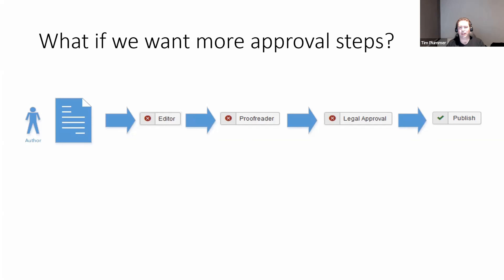But what happens if we want a more sophisticated workflow? For example, if you were publishing content and you wanted one person to create the article, another person to do some editing, then a proofreader to check spelling and grammar, then a legal department to make sure you're complying with laws, and then it becomes published. If you want to do that in Joomla 3, you wouldn't be able to do it out of the box.